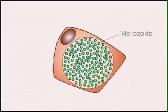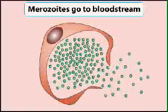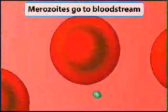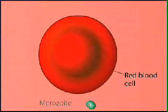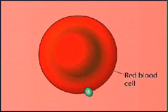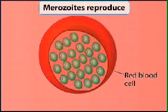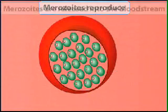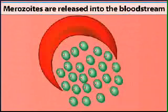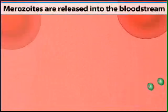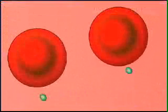About a week later, the merozoites burst out of liver cells and enter the bloodstream. In the bloodstream, the merozoites infect red blood cells, where they again reproduce and burst out of the infected cells. The resulting merozoites can infect other red blood cells, yielding a cycle of infection and eruption. Malaria is characterized by repeated bouts of fever, each of which correlates with the synchronous release of merozoites from a population of red blood cells.